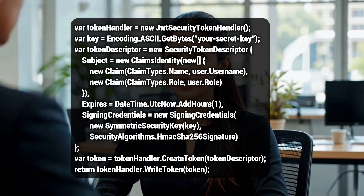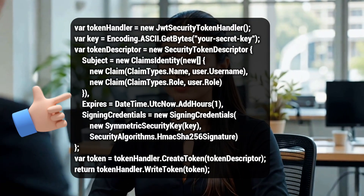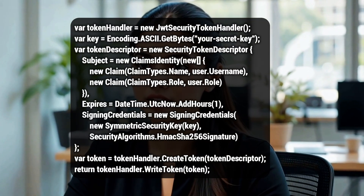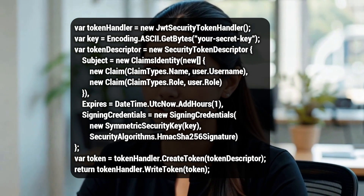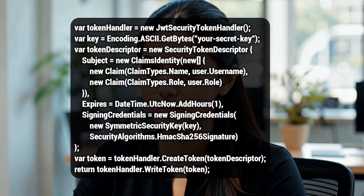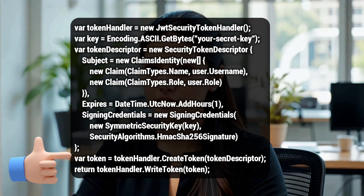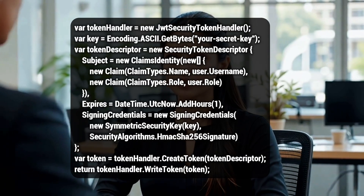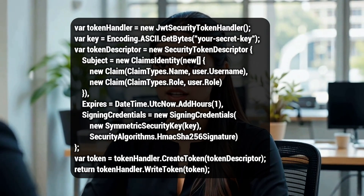Finally, I define the signing credentials. This involves taking my secret key, creating a symmetric security key with it, and specifying the signing algorithm, which is typically HMAC SHA-256. Once the descriptor is ready, I just call token handler dot createToken and then token handler dot writeToken to get the final serialized JWT string that I can send back to the client.